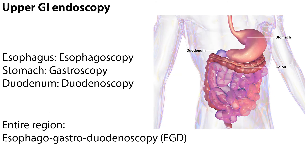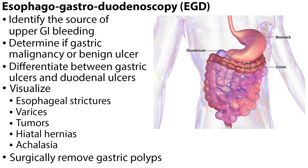An upper GI endoscopy may look at just the esophagus, the stomach (gastroscopy), or the duodenum. If it involves the entire region, it is called an esophagogastroduodenoscopy, more easily referred to as an EGD. This test is useful for identifying the source of upper GI bleeding and for determining whether there is a gastric malignancy or benign ulcer. It can also differentiate between gastric ulcers and duodenal ulcers. An EGD can visualize esophageal strictures, varices, tumors, hiatal hernias, and achalasia, as well as surgically removed gastric polyps.